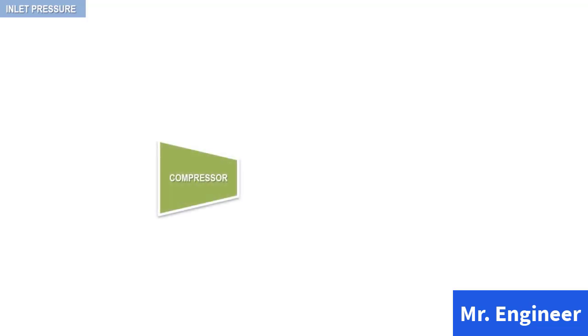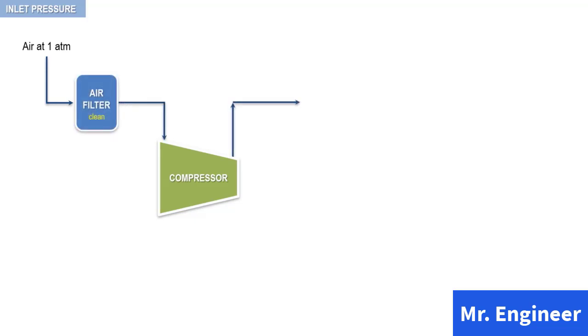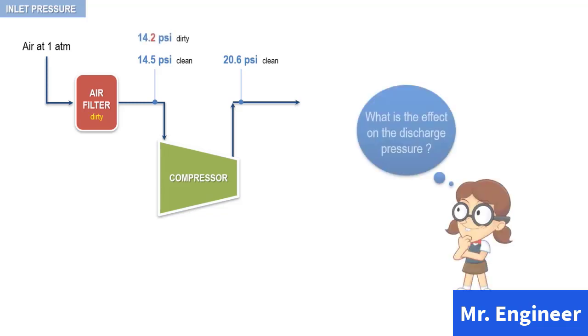Let's begin by considering the effects of a variation in inlet pressure. Consider that the following compressor draws atmospheric air through an inlet filter. The rated compressor inlet pressure is 14.5 PSI. The discharge pressure in this case is 20.6 PSI. When the filter becomes dirty, the inlet pressure at the compressor flange drops to 14.2 PSI. What is the effect on discharge pressure and shaft horsepower at the rated inlet volume flow?